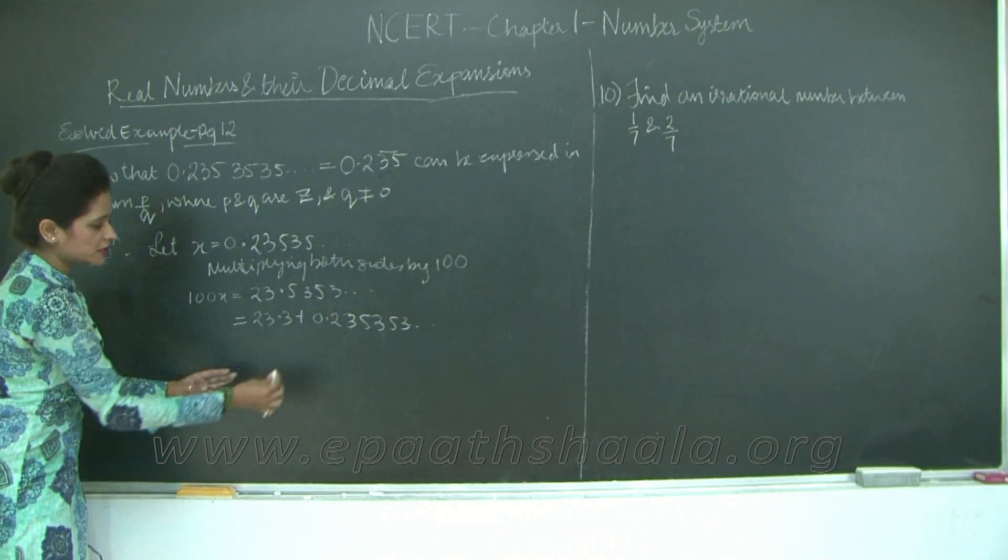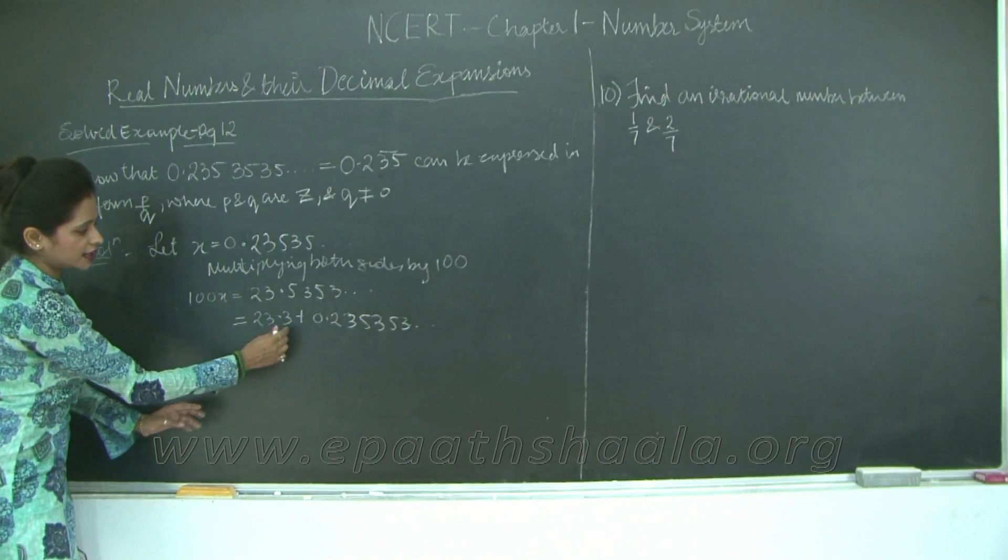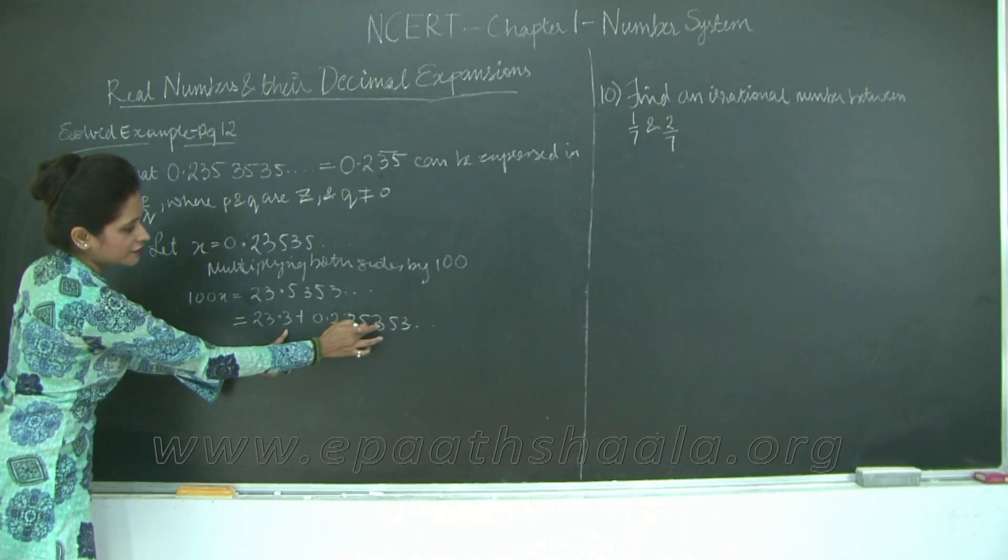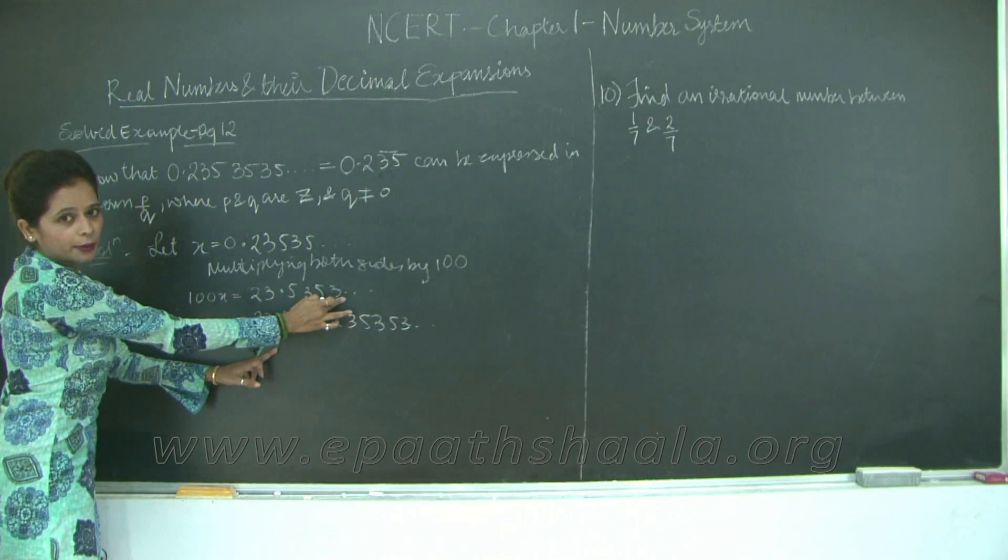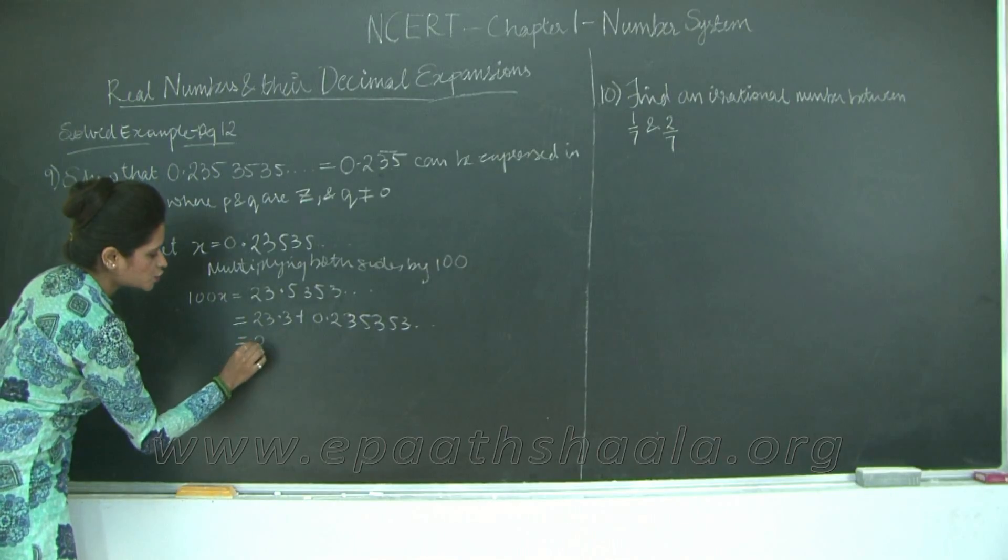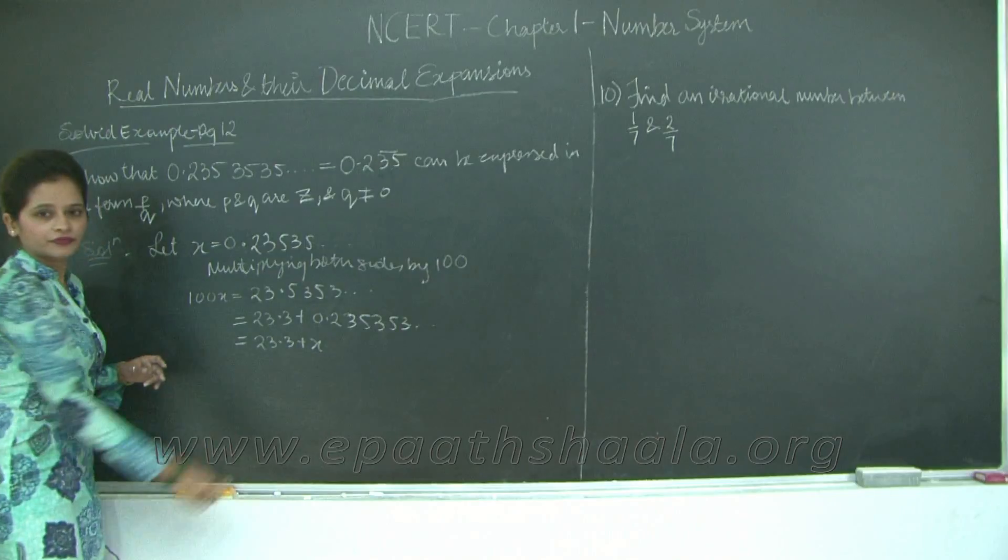I will write this as 23.3 plus 0.235353 and so on. When you add these two numbers, see what you will get. The number before the decimal is going to be 23, and after the decimal, 53535353, which is the number after the decimal. So this can be further written as 23.3 plus x.